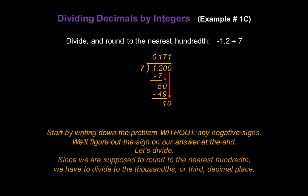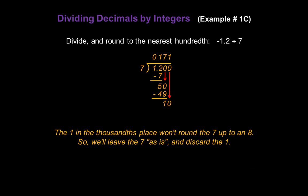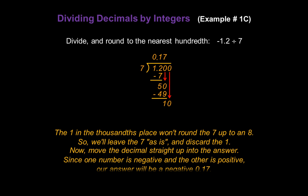We don't need to bother to figure out a remainder here because the 1 in the thousandths place won't round the 7 up to an 8. So we're going to leave the 7 as is and we can discard the last 1 that we divided into. Now move the decimal straight up into your answer and figure out the sign on the answer. Since one number is negative and the other is positive, our answer will be a negative 0.17.